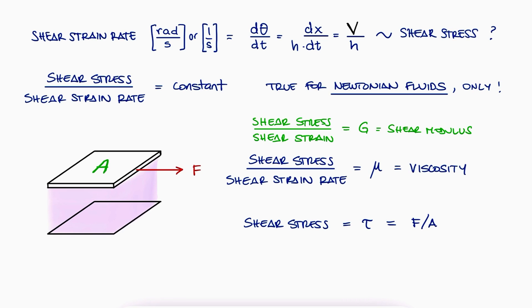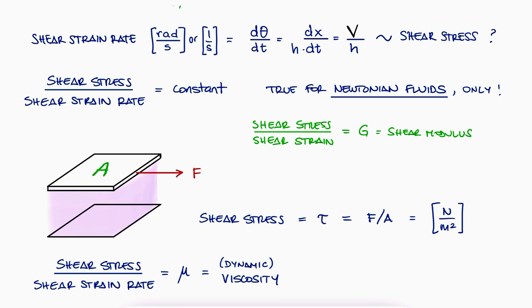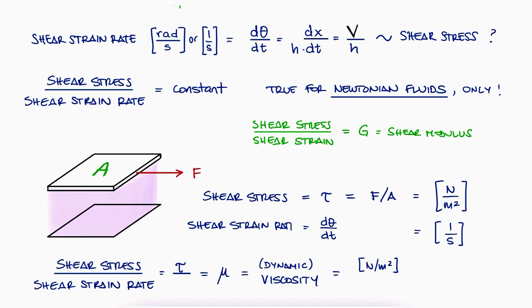Now, this viscosity is specifically the dynamic viscosity and we use the Greek letter μ as its variable. The units for dynamic viscosity in metric can be found by substituting N/m² for τ and 1/s for shear strain rate, and rearranging to either pascal-second or kg/(m·s).